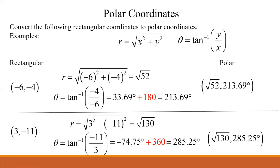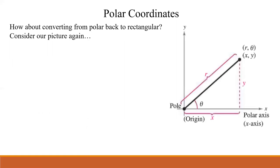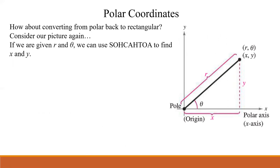What if we go the other direction — starting with a polar coordinate and converting it back to x, y? Looking at that picture, if I know r and the angle, how can I find x and y? This goes back to SOHCAHTOA from the beginning of the semester. It's easy to work out that x equals r times cosine of theta, and y equals r times sine of theta.